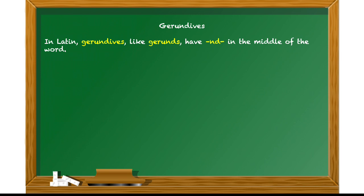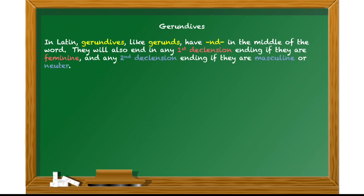In Latin, gerundives, like gerunds, are going to have that 'nd' in the middle of the word. So anytime you see the 'nd' in the middle, it's going to indicate either a gerund or a gerundive. But here's the key thing about gerundives: they will also end in any first declension ending if they're feminine, and any second declension ending if they are masculine or neuter. Since they're adjectives, they have to change gender depending on the noun they modify.